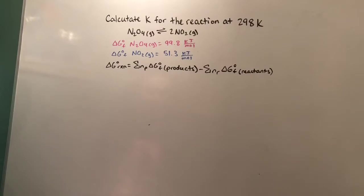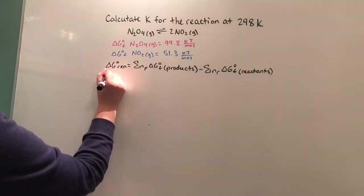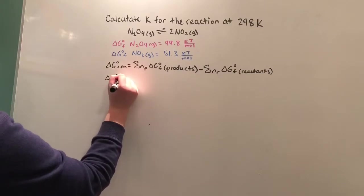So in order to find the equilibrium constant, the first thing we're going to do is find the ΔG reaction. We're going to do that by multiplying the moles of each product by ΔG of formation and then subtracting it by the moles of each reactant multiplied by its ΔG formation.